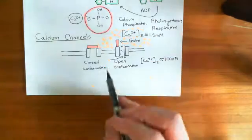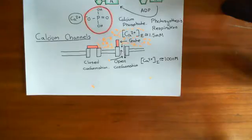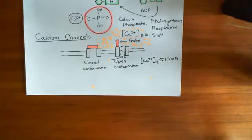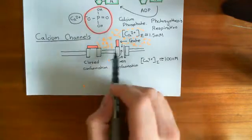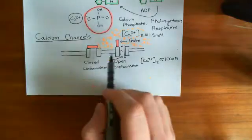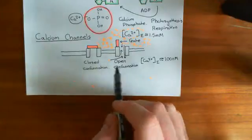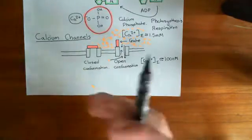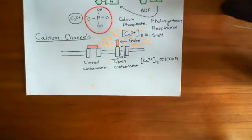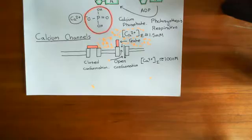So when calcium channels in the cell membrane open, they lead to calcium entry into the cell. That's going to elevate calcium levels in the vicinity of the channel quite dramatically, and that can carry a signal — it can cause changes within the cell. That's the principle of all I want to say on channels at the moment.